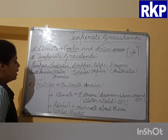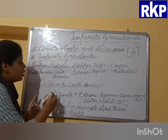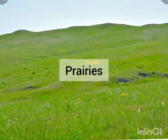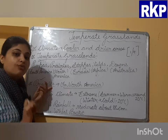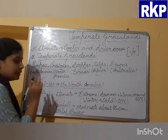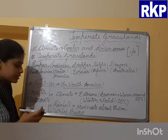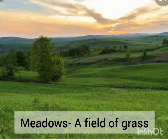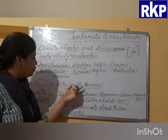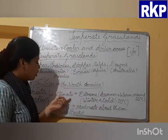First, Prairies — the name for temperate grasslands in North America. The word 'prairies' is derived from the Latin word 'prieta', which means meadows — that is, a field of grass. So prairies literally means a field of grass.